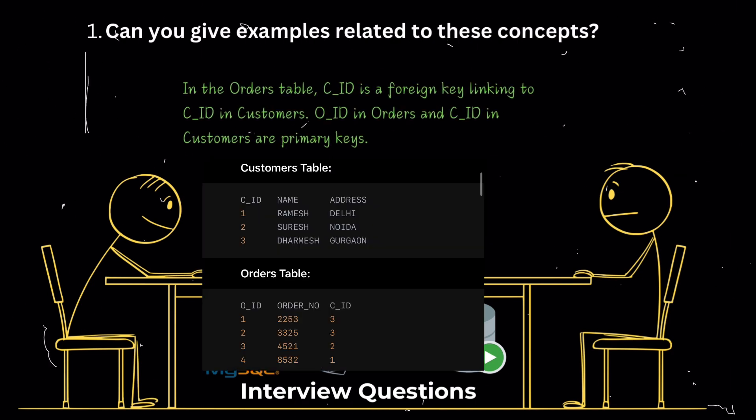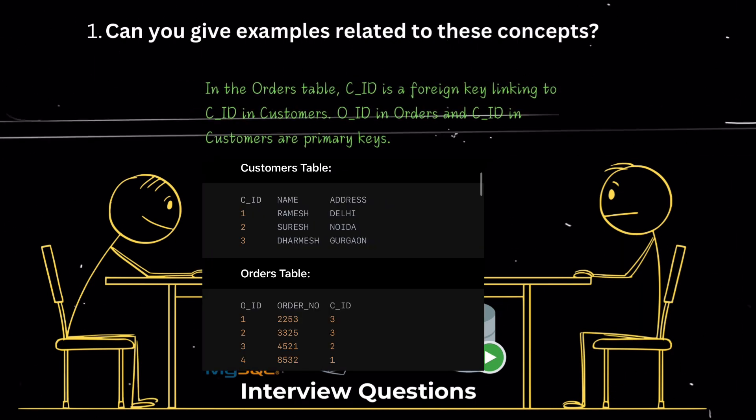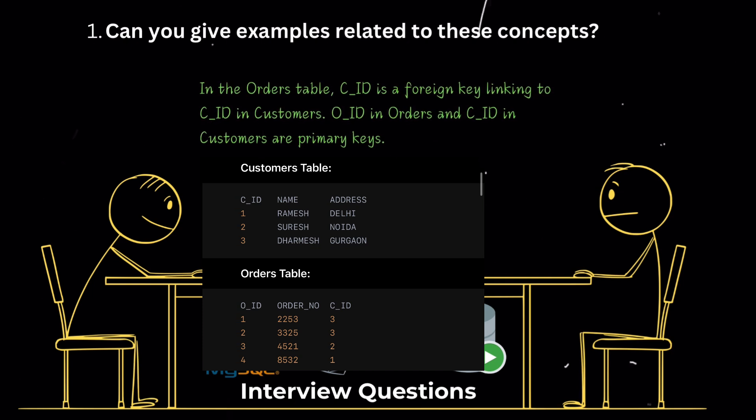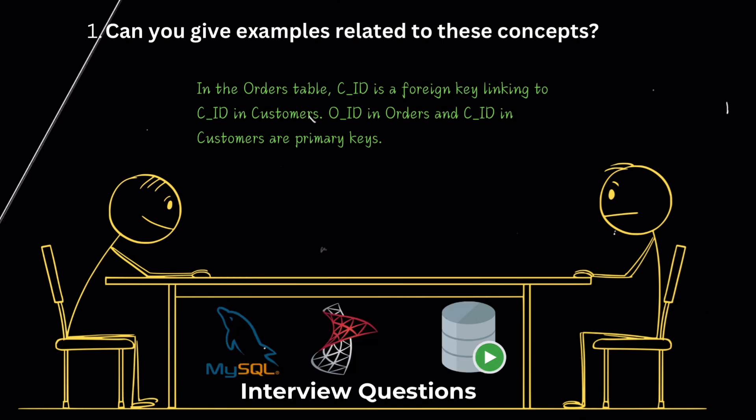Can you give examples related to these concepts? Sure. Let's use the customers and orders tables. Here, C_ID in orders is a foreign key that links to C_ID in customers. This relationship ensures that each order is associated with a valid customer. The O_ID in orders and C_ID in customers are primary keys, ensuring unique identification of records in their respective tables.